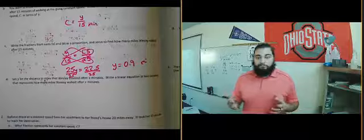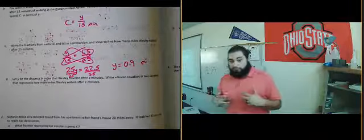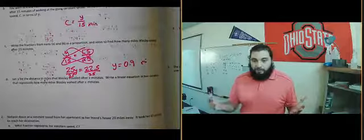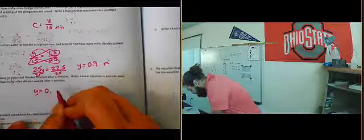So that's what they want you to do with part D. It's essentially to create an equation in terms of y and x as to figure out how many miles have been traveled after x amount of minutes. So in order to do that, we would take y is equal to, and then in terms of y and x, it's going to be 0.9.